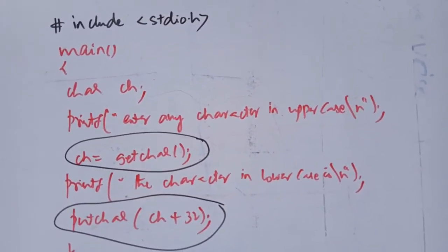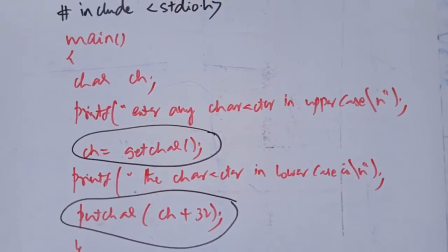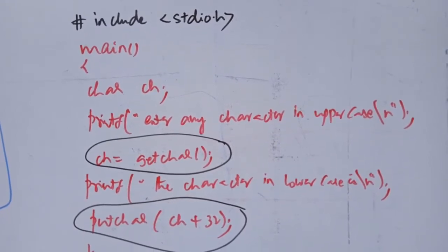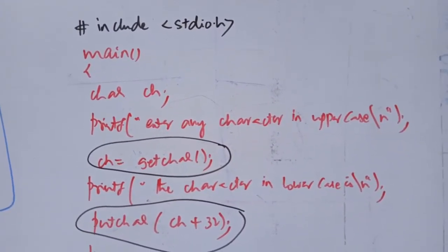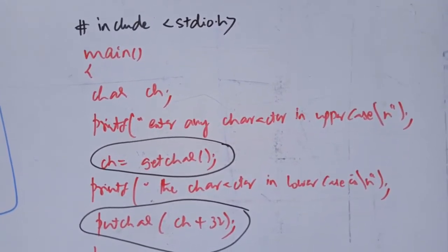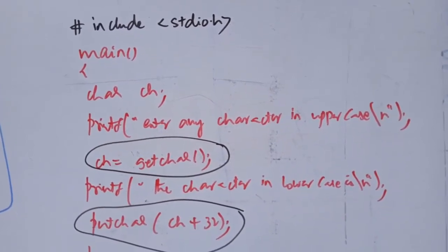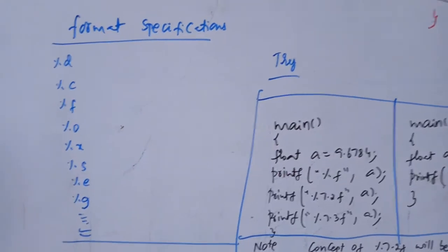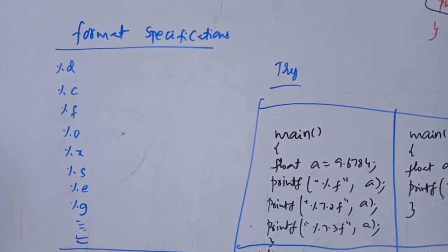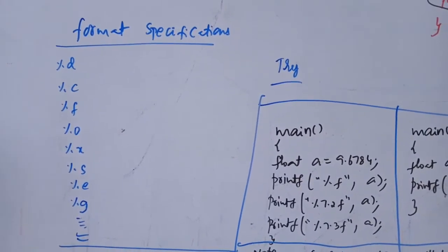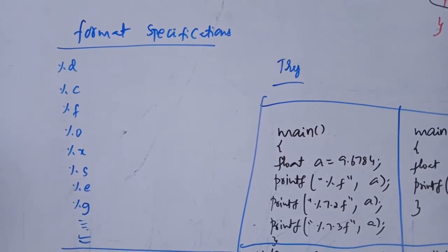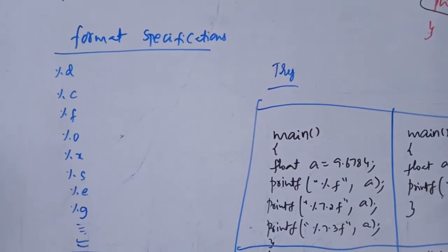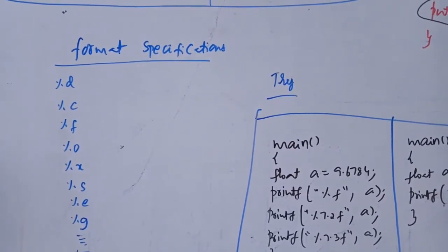If you have a small 'a' minus 32, then you need to convert it into lowercase. We will use this program with getchar and putchar to execute the case conversion. Checking the output to see what needs to be discussed.